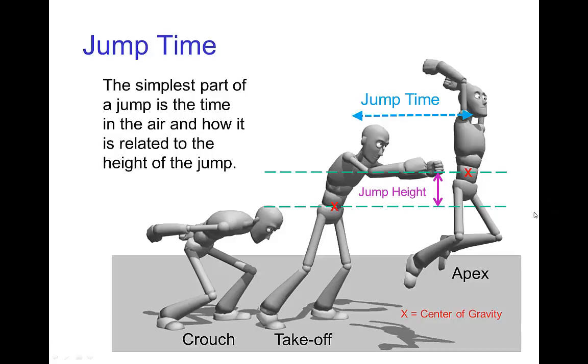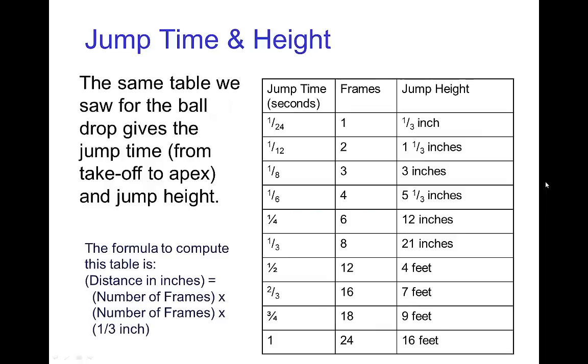Now the other aspect about the time in the air for a jump, this is something which we already know how to determine because it's the same as for inanimate objects as we did with basic falling motion. So you may recall this table which was discussed with falling motion. So the time it takes for all objects to fall, say, from a height of 12 inches is 6 frames. And this table gives different heights.